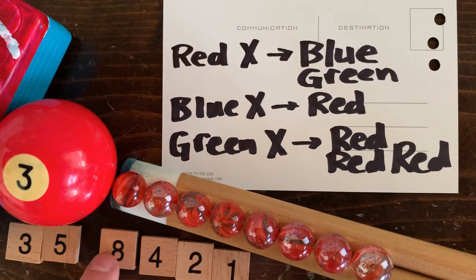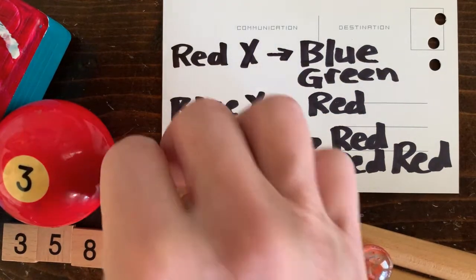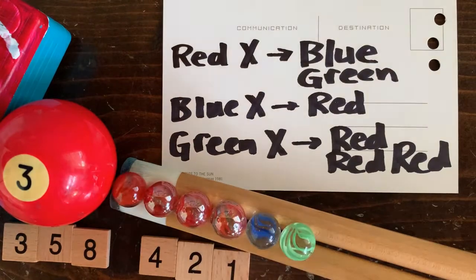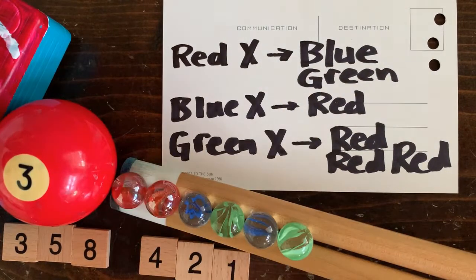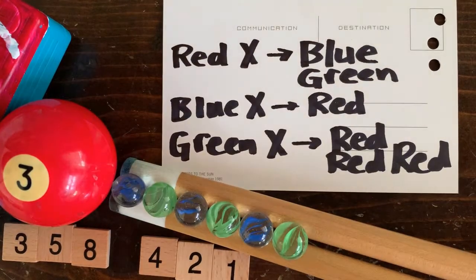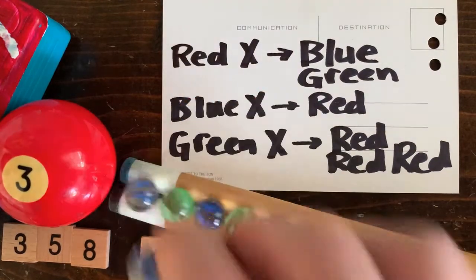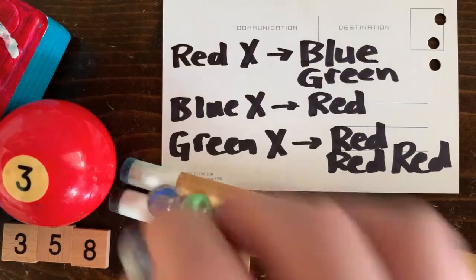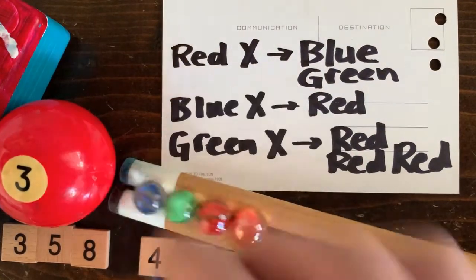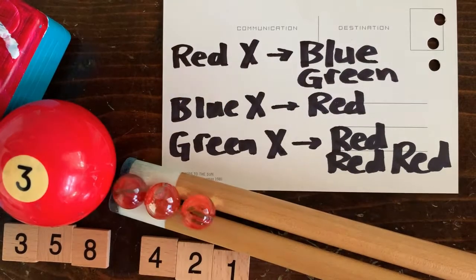The program keeps running. Replace red x with blue green, again, and a couple more times. Then replace blue x with red, and do that a couple more times. And now we have our third output, which is 4, as expected.